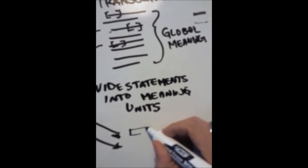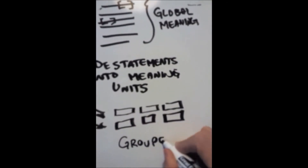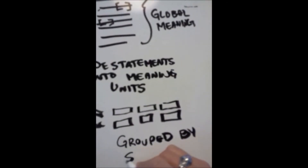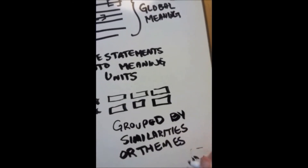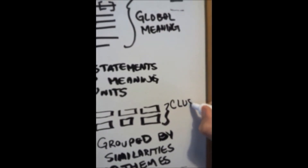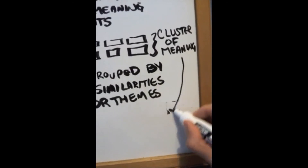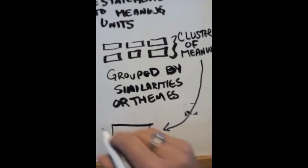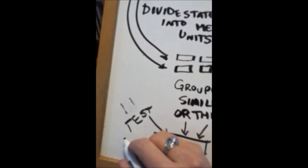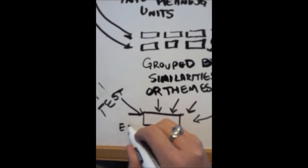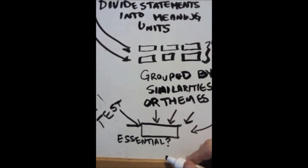These meaning units are then subjected to a process called free imaginative variation to determine which of them is essential for, and constitutive of, a fixed identity for the phenomenon under study. The idea is to subject an experience to every variation imaginable, so that one can see how far it can be stretched before it loses identity. In doing so, meanings that are not necessary to the identity of the phenomenon can be eliminated. Lastly, the researcher gives an elaboration of the findings by writing a description that presents the essence and structure of the phenomenon.